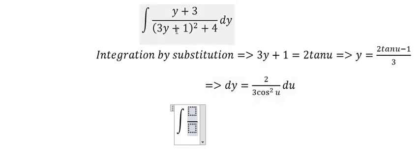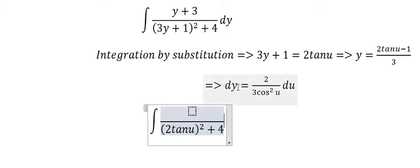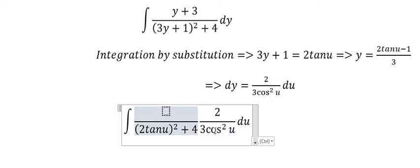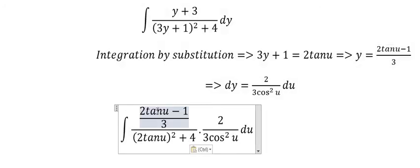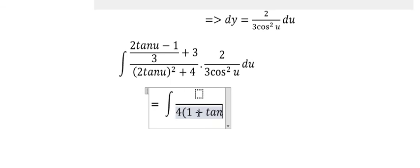We will change 3y plus 1 into 2 times tan u. Y will change to this one. Now we will simplify this integral. We have 2 power 2 times tan u, you put about 4 and 1 plus tan u power 2 in here.